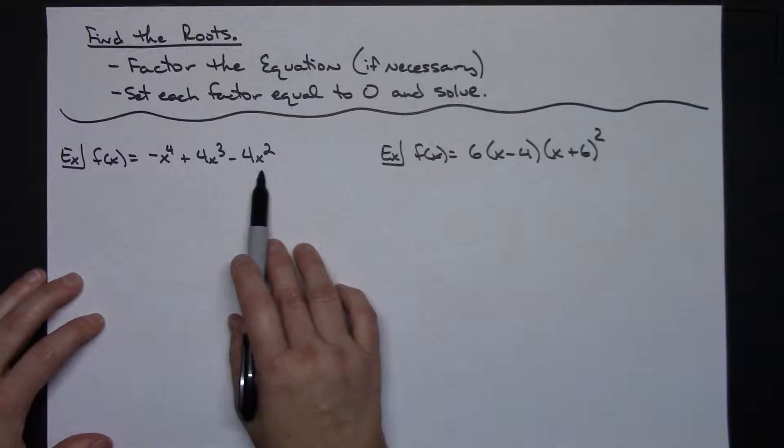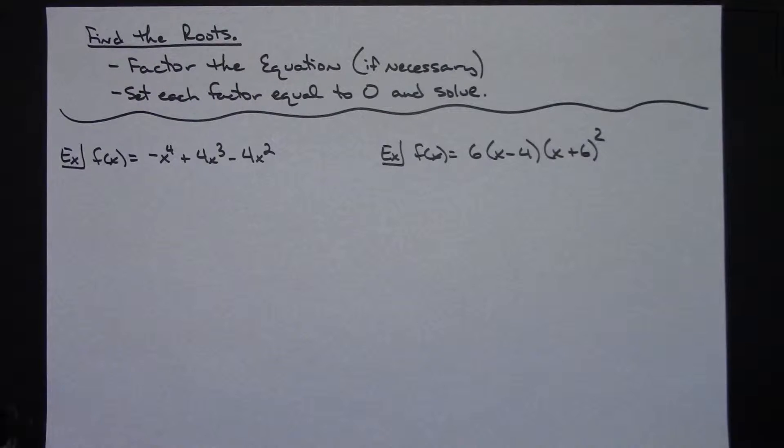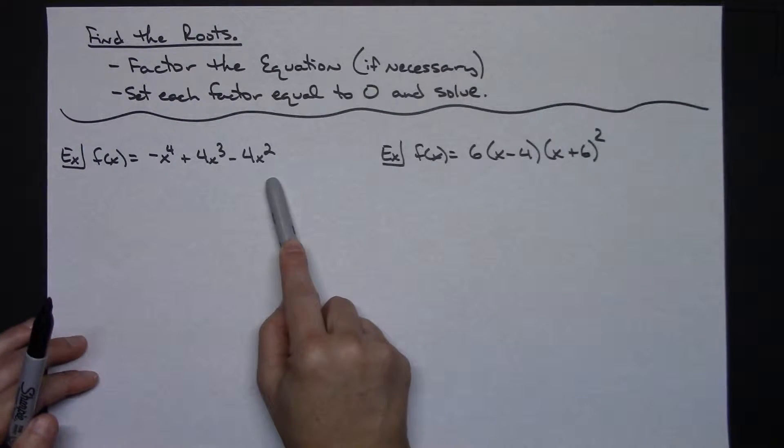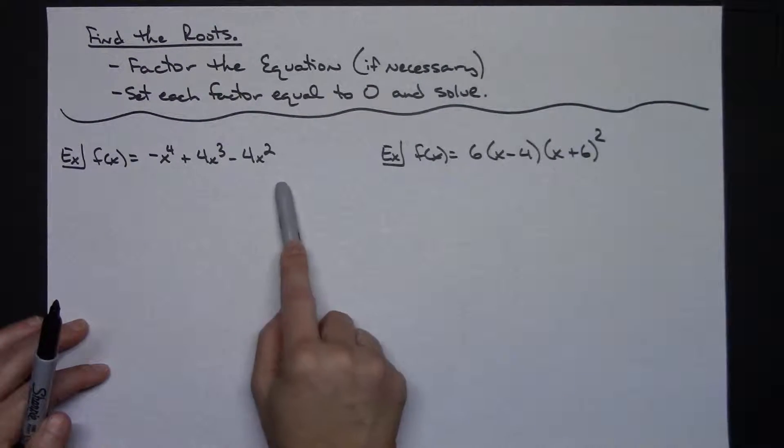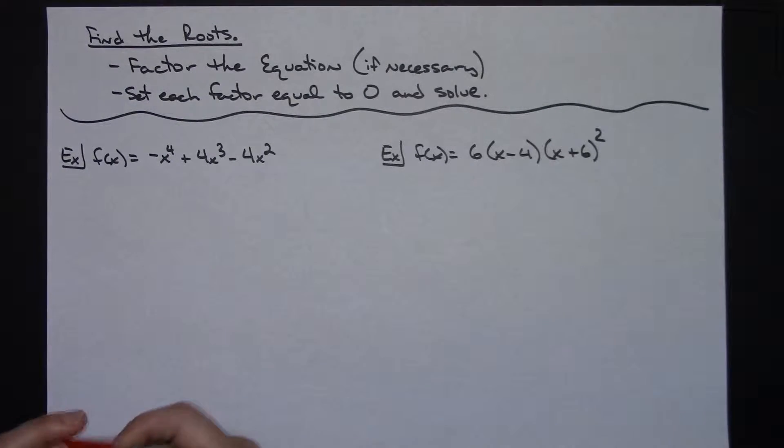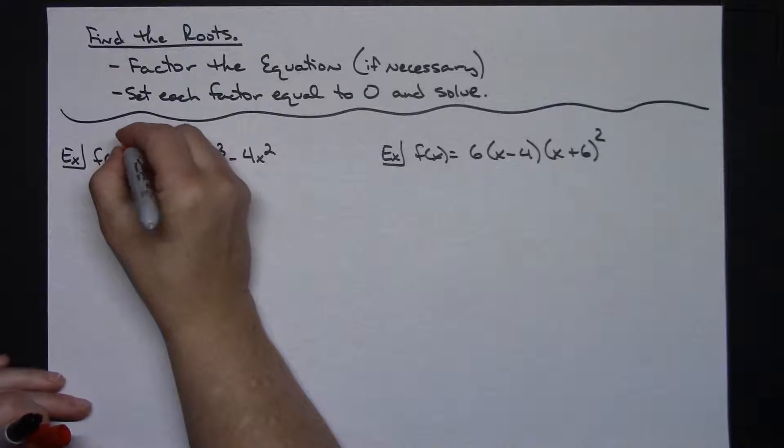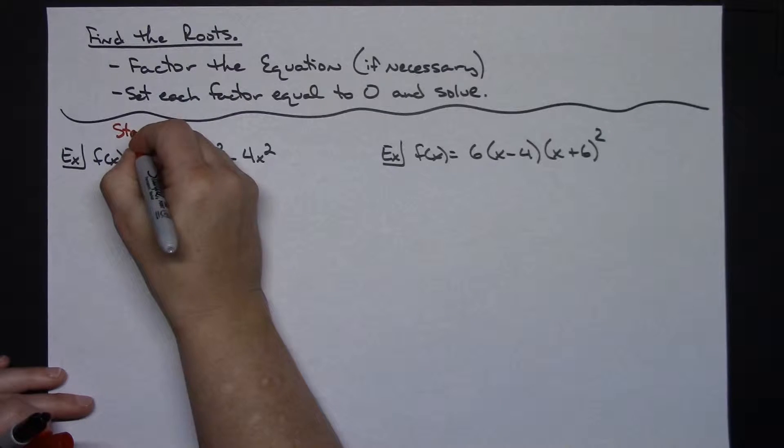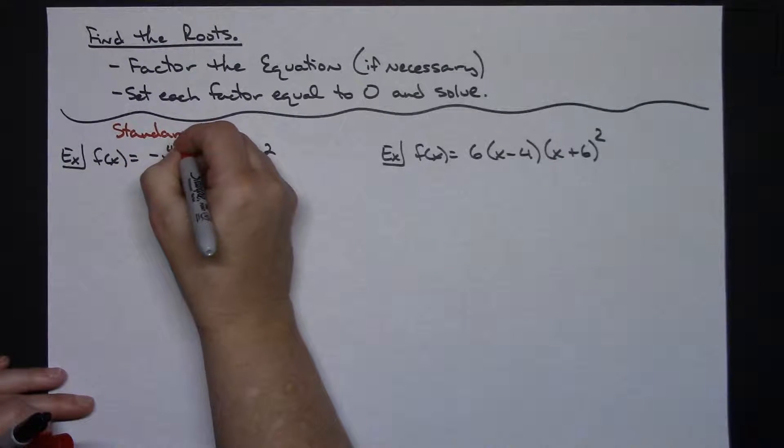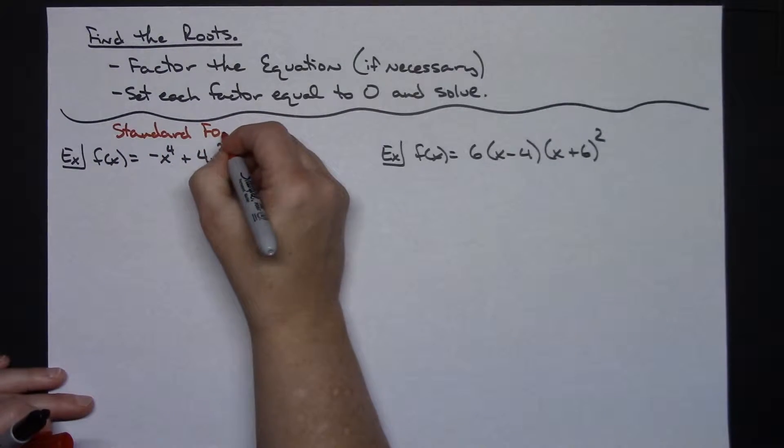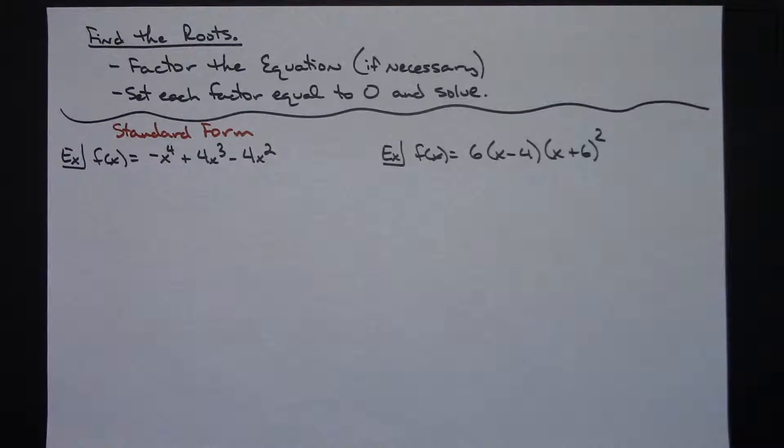In this one over here, I might note looking at this polynomial function, it is in standard form so it has not yet been factored. That means we are definitely going to have to factor it. Let's go ahead and label it as standard form. I talked about standard form and factored form in an earlier video.